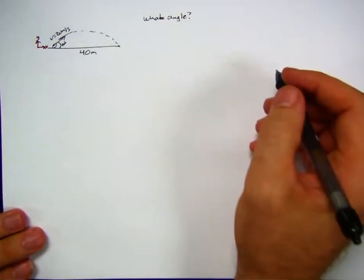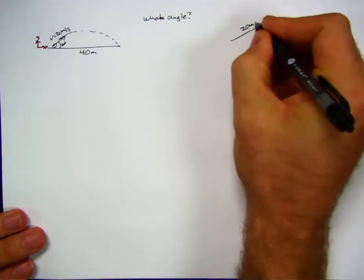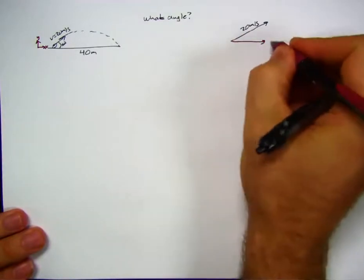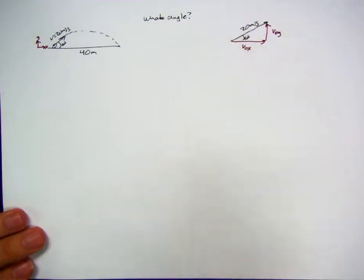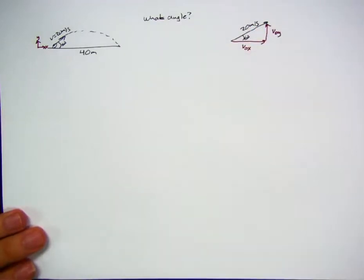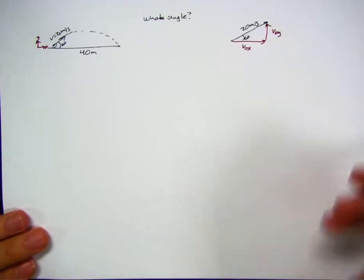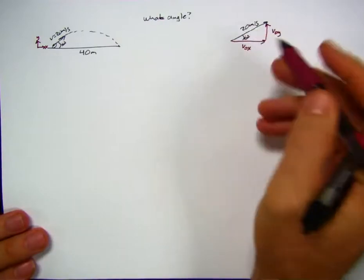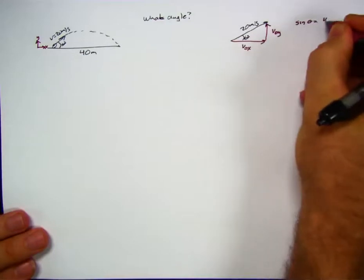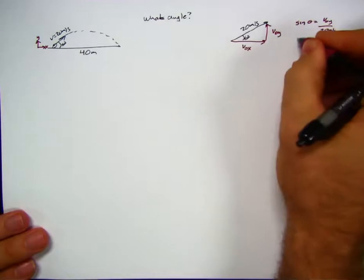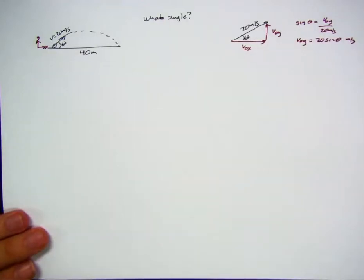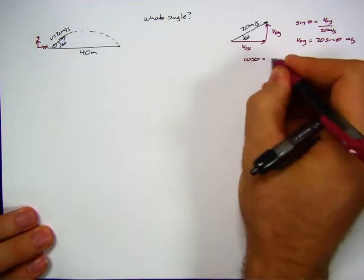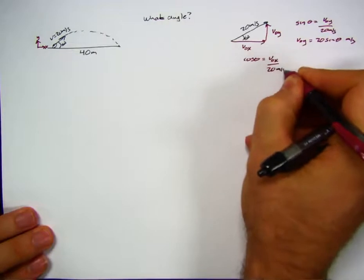Once we have that angle we can answer all the other questions — how high, how much time in the air, final velocity — but let's just focus on this one for now. Let's take our 20 meters per second and break it up into a horizontal piece v-zero-x and a vertical piece v-zero-y, with unknown angle theta. The sine of theta is opposite over hypotenuse, so sine theta equals v-zero-y over 20, meaning v-zero-y equals 20 sine theta meters per second. Similarly, cosine theta gives v-zero-x equals 20 cosine theta meters per second.